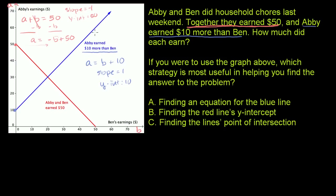We aren't dealing with only the blue constraint or only the red constraint — we're dealing with both of them. We know that both are true. So whatever earnings Abby and Ben made, they have to satisfy both constraints, meaning they have to sit on both of these lines. What is the only point sitting on both lines? The only point that sits on both lines is their intersection. That point is valid from the perspective of the blue constraint — that Abby earned $10 more than Ben — and also valid from the red constraint — that together they earned $50. So that point represents Abby's and Ben's earnings satisfying both constraints. We can eyeball it: it looks like Abby earned $30 and Ben earned $20.